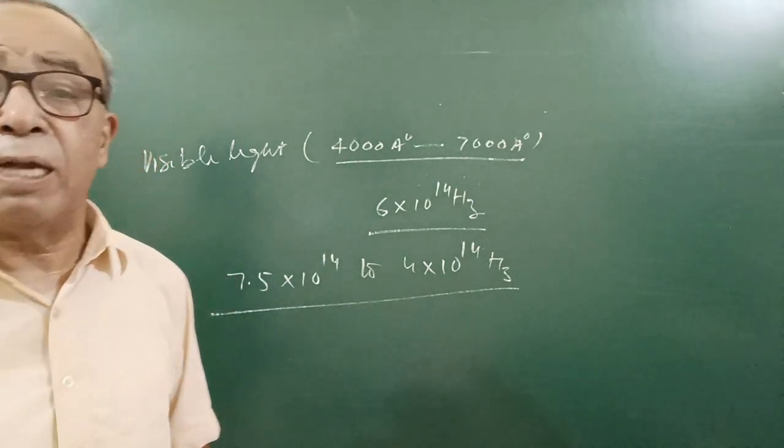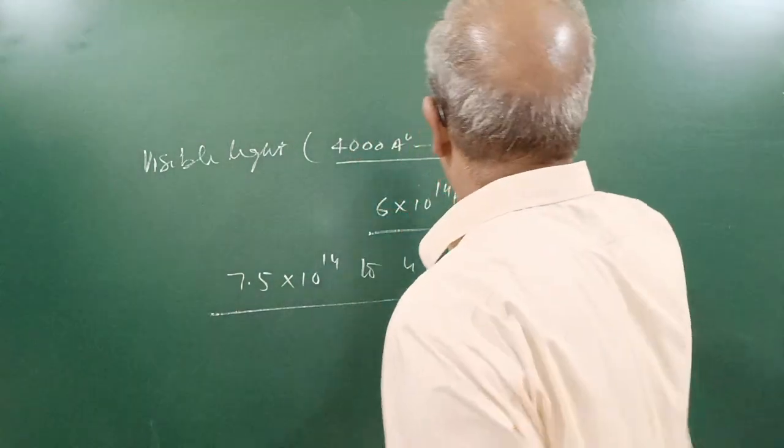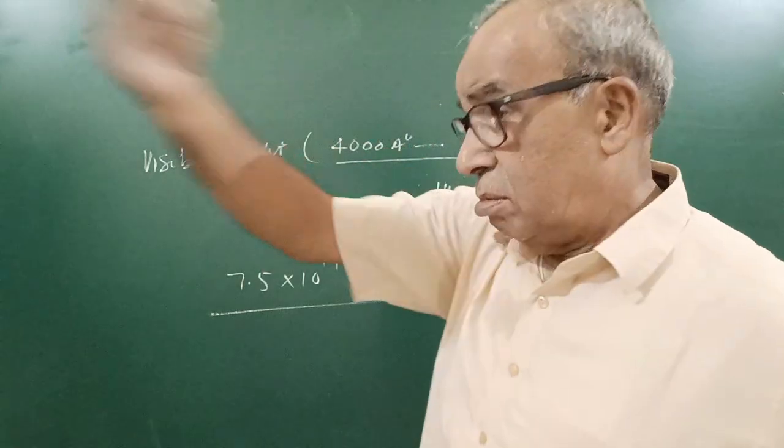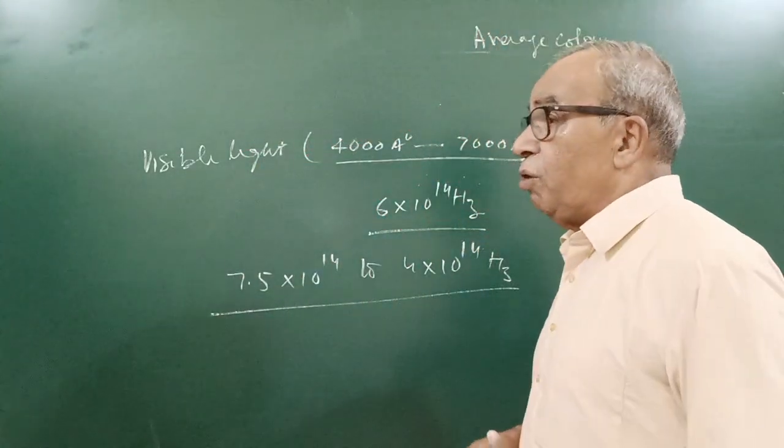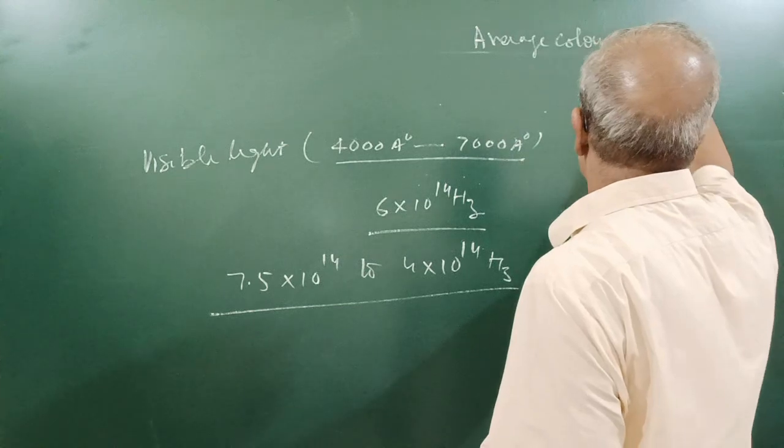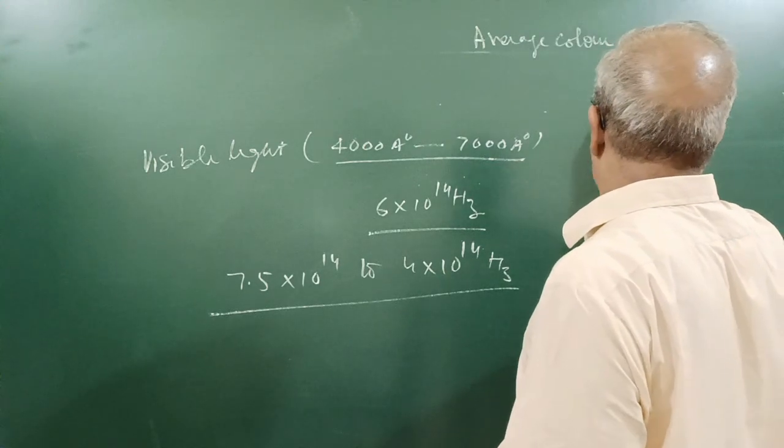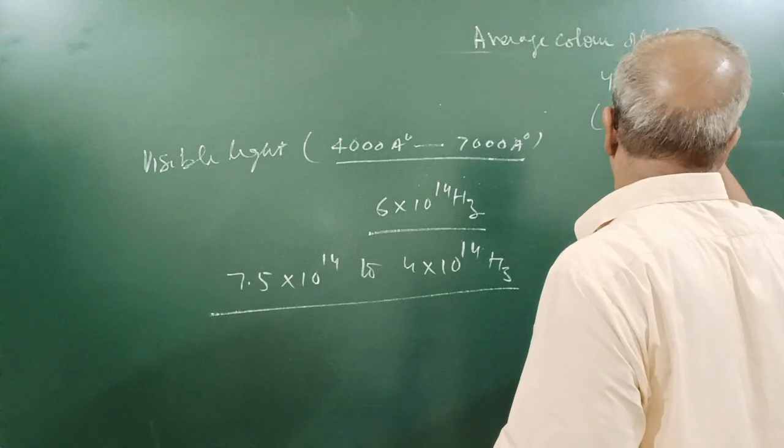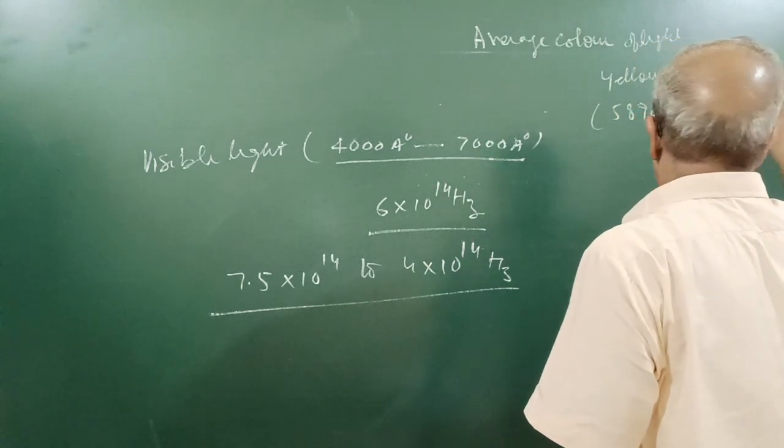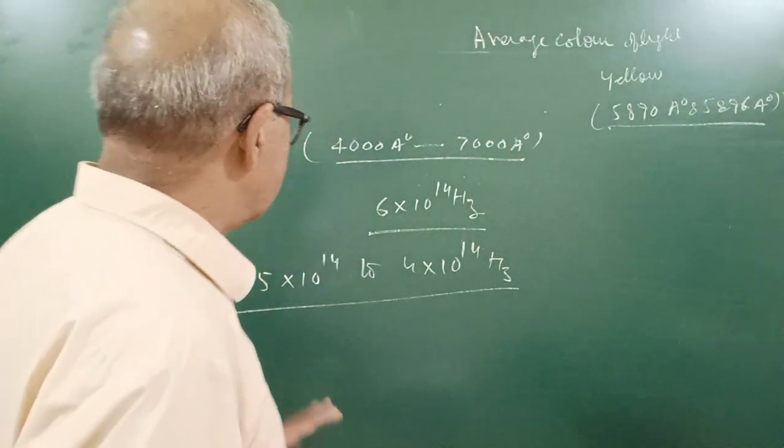In an example it was asked what is the average wavelength of light, average color of light. When we teach ray optics and wave optics we will be telling again and again but students do not remember. Average color of light is yellow, and yellow color has wavelength 5890 angstrom and 5896 angstrom. These are the wavelengths of sodium light. Sodium lamp has only these two wavelengths emitted.